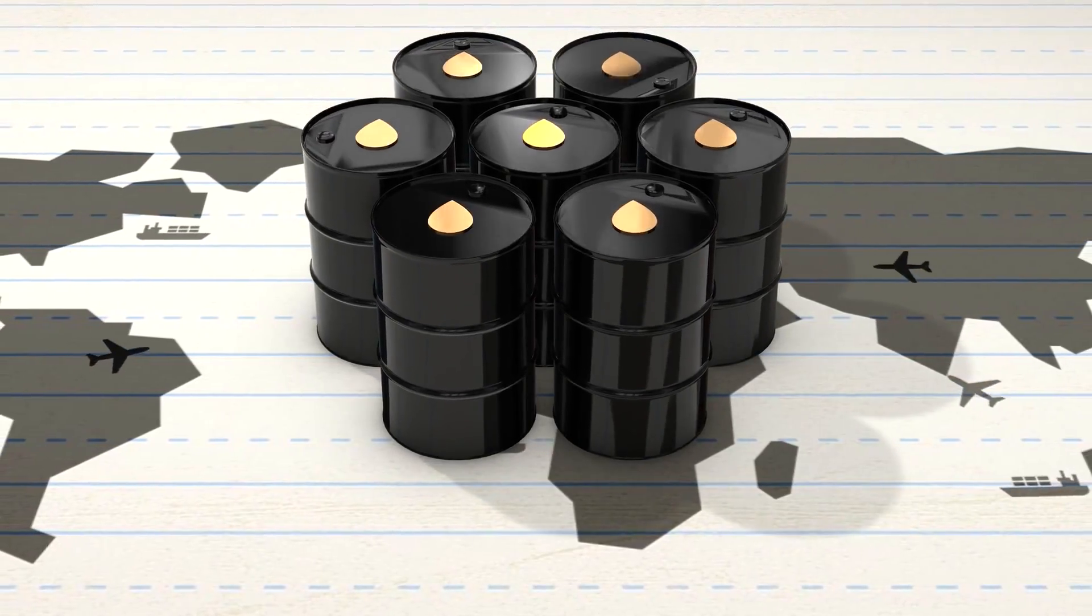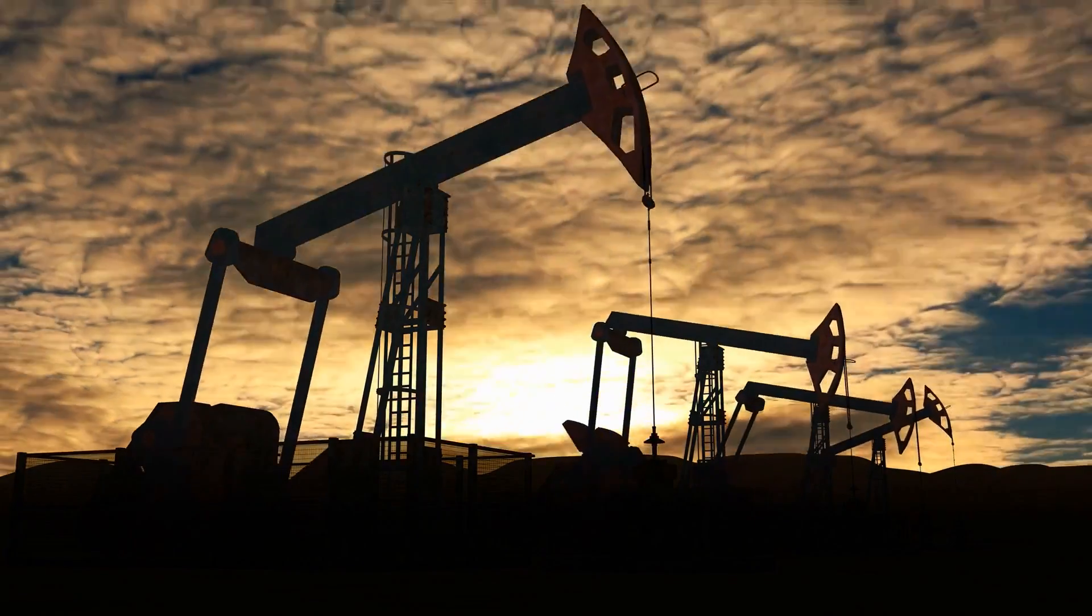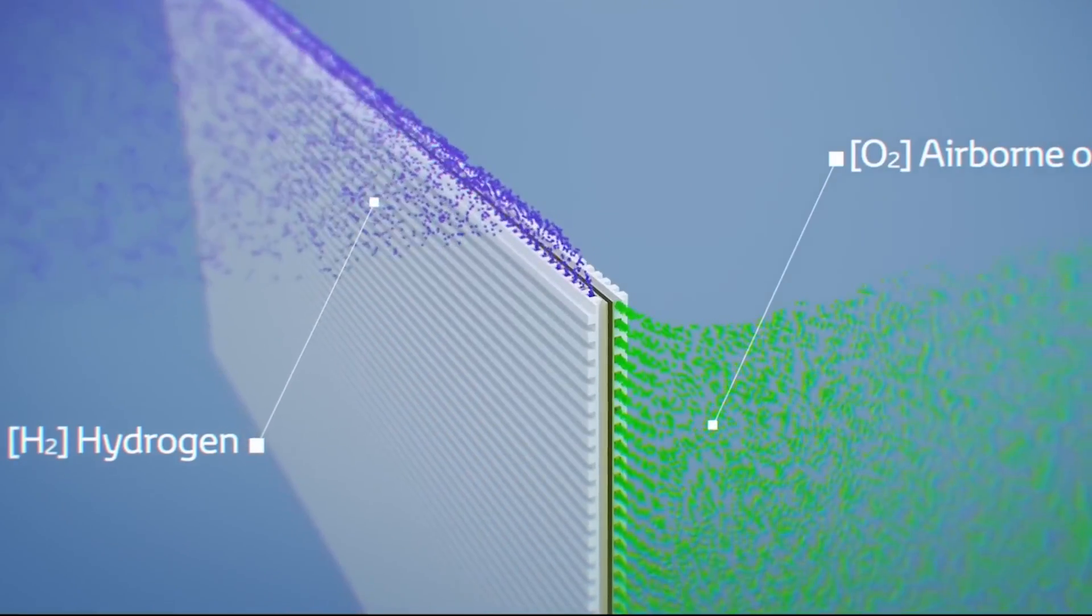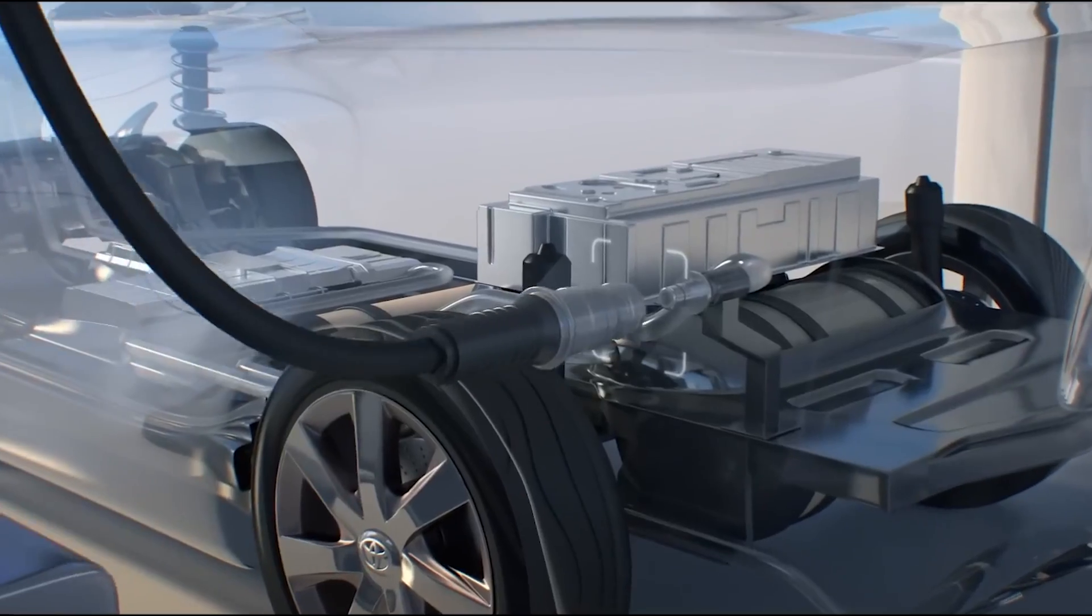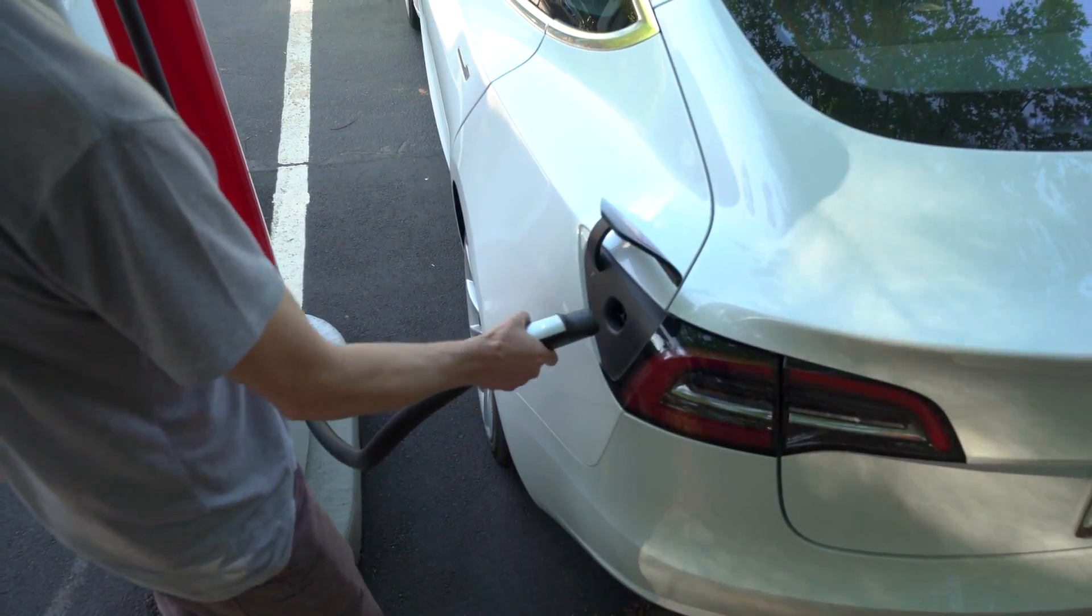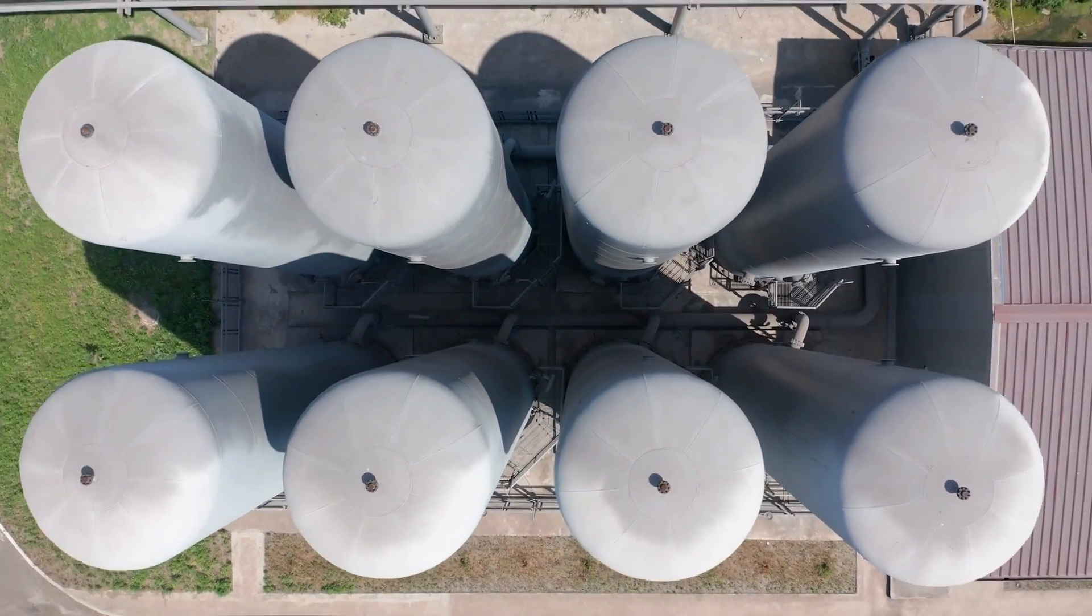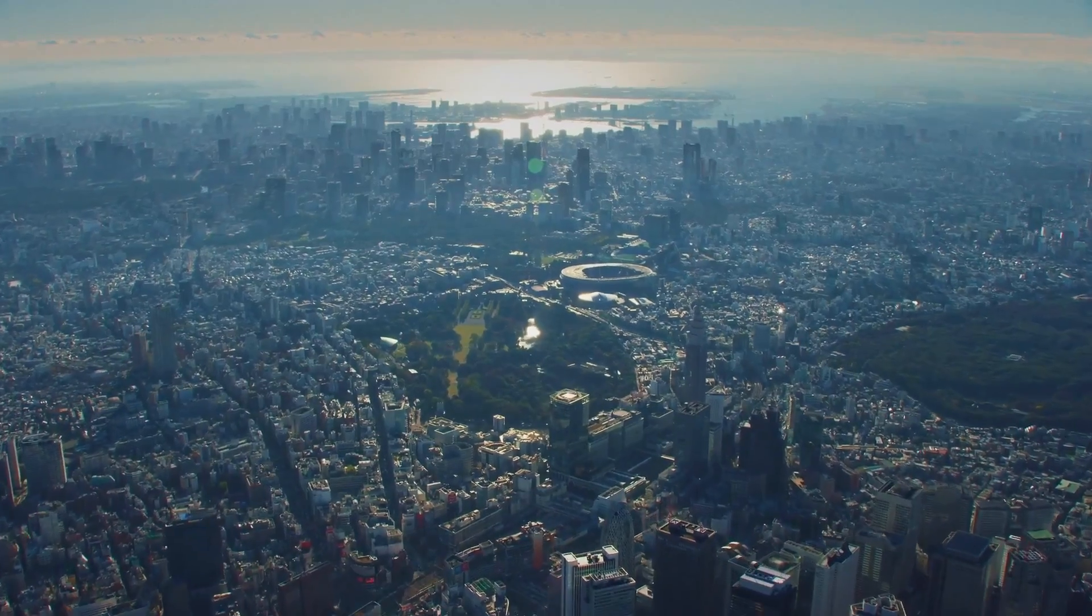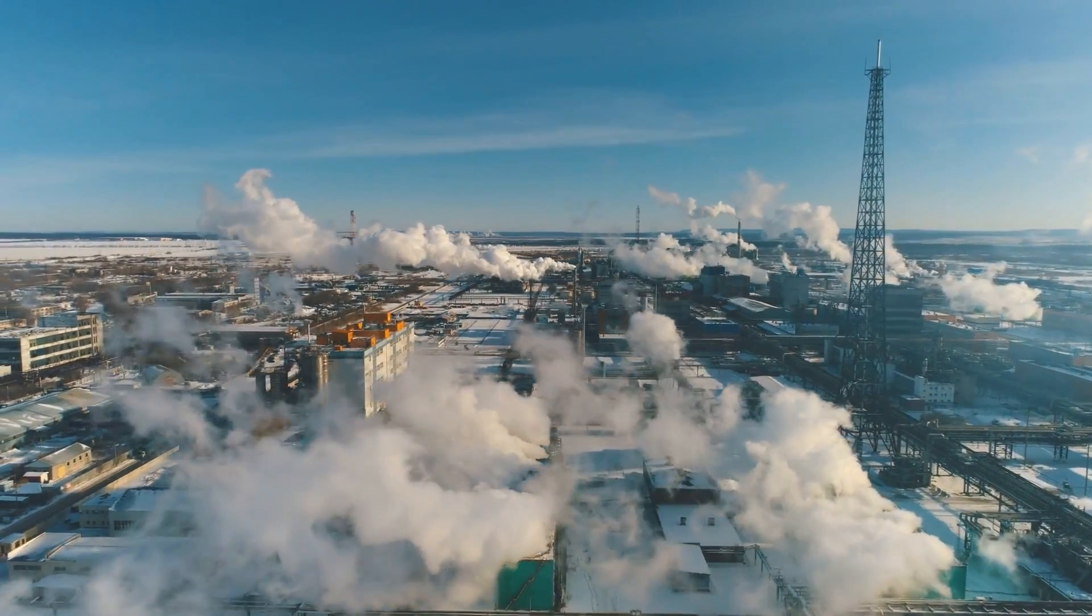Nissan's move towards hydrogen fuel cells may also have geopolitical implications. As the world seeks to reduce reliance on fossil fuels and transition to cleaner energy sources, hydrogen has gained attention as a potential solution. Unlike electric vehicles, which rely on the availability of electricity grids and charging infrastructure, hydrogen can be produced from various sources, including renewables and natural gas. This flexibility in sourcing hydrogen could offer countries with limited electricity infrastructure an alternative pathway towards decarbonization.